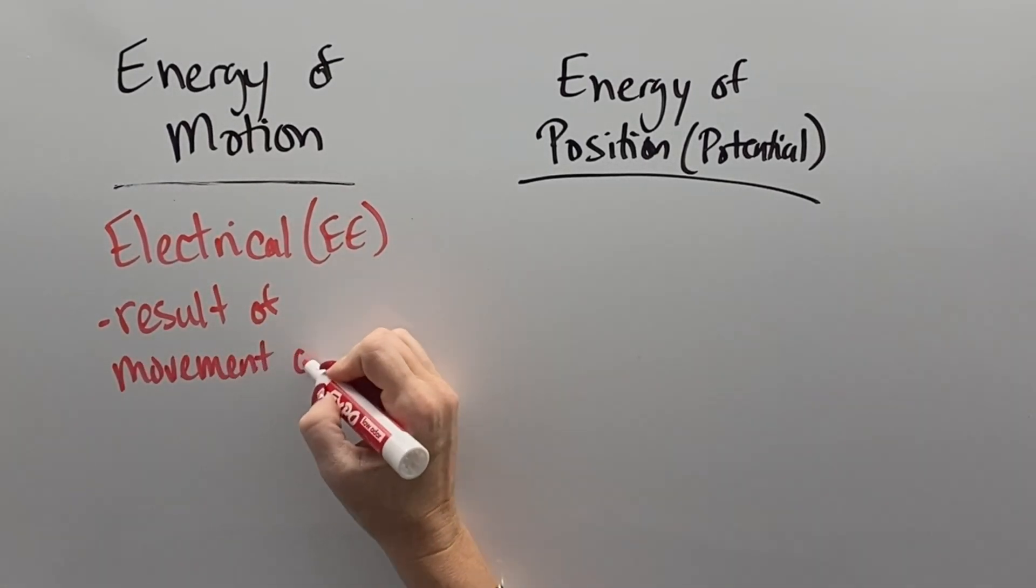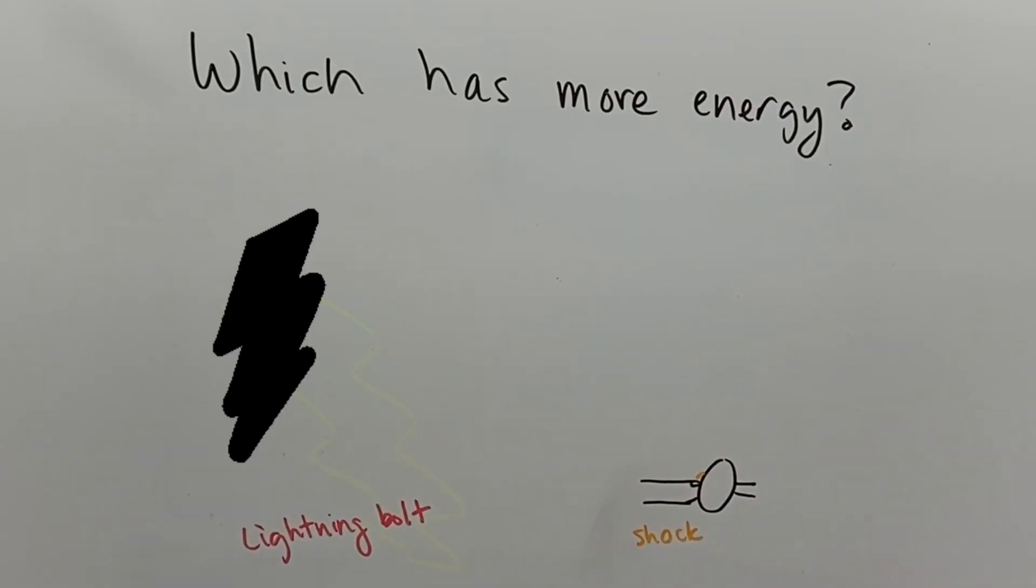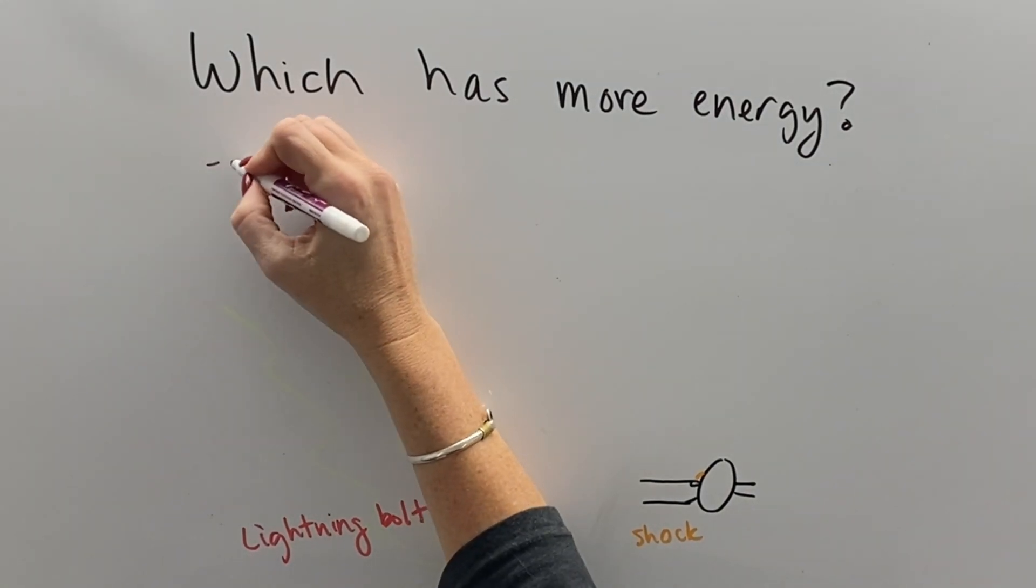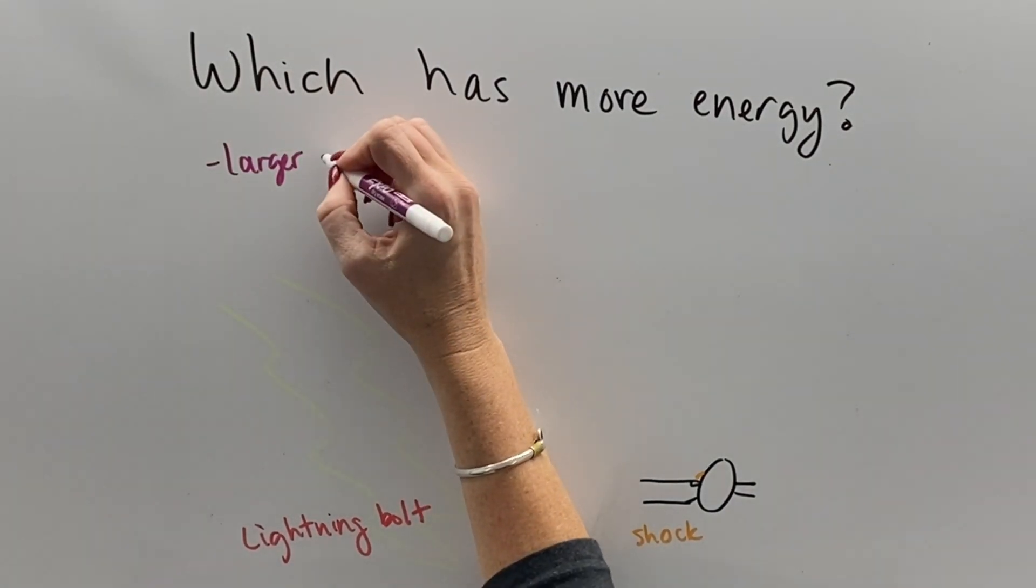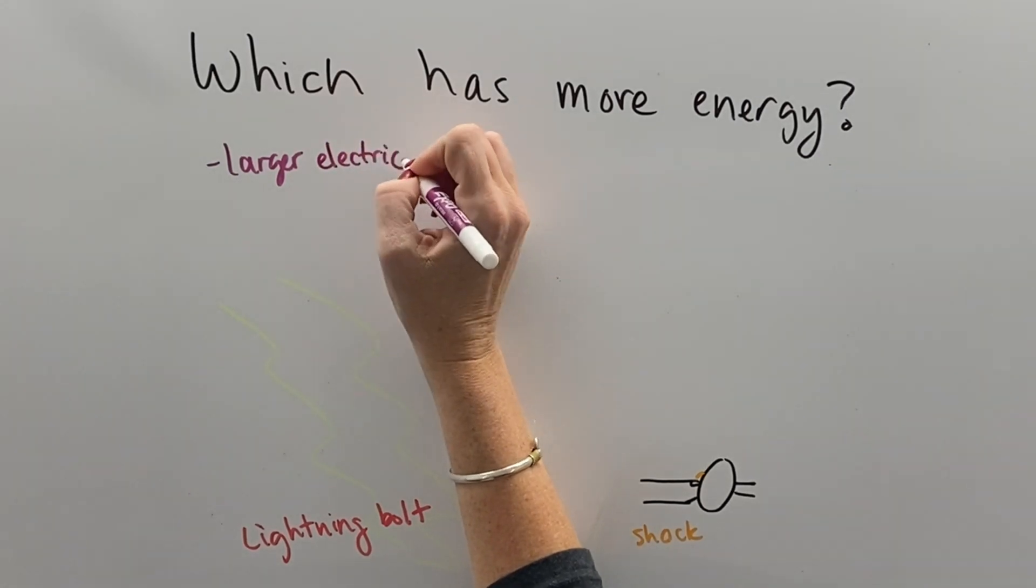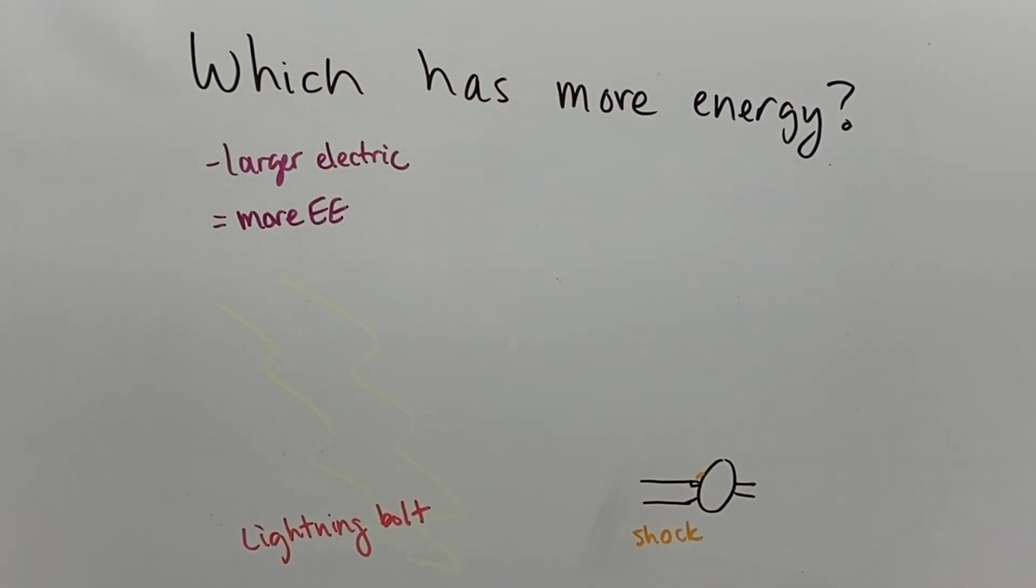Electrical energy is the result of, again, the movement of electrons. If we were to compare a lightning bolt and a shock, the lightning bolt carries a whole lot more electricity, and so it has more electric energy.